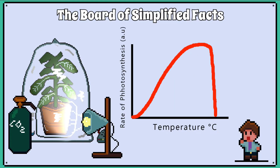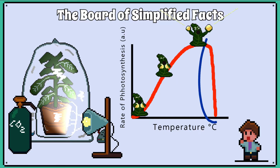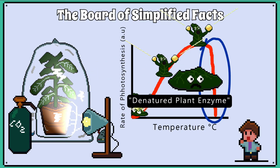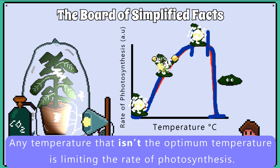Now that we have carbon dioxide levels and light intensity at optimum levels, we can control the temperature. This will produce a graph that is very similar to an enzyme activity versus temperature graph. The temperature where the rate of photosynthesis is optimum is 24 degrees Celsius for this specific plant species. At the peak, temperature is not the limiting rate of photosynthesis, but another factor might be. Notice that if we increase the temperature beyond the optimum, we get a sudden drop in the rate, and this relates to the enzymes involved in photosynthesis denaturing. Therefore, any temperature that isn't the optimum temperature is limiting the rate of photosynthesis.